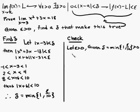Greater than zero, let absolute of x minus three be less than delta.